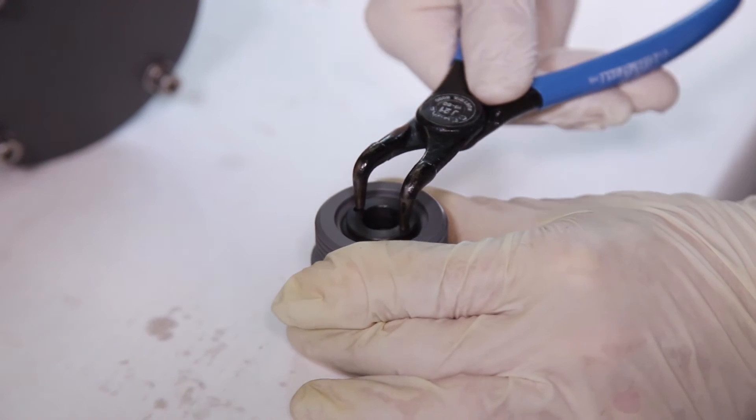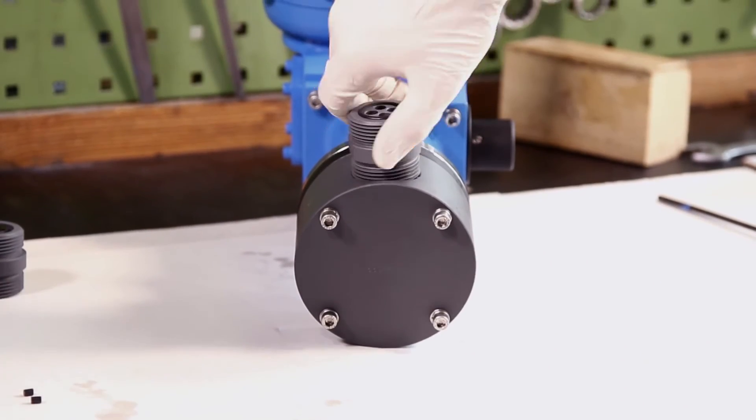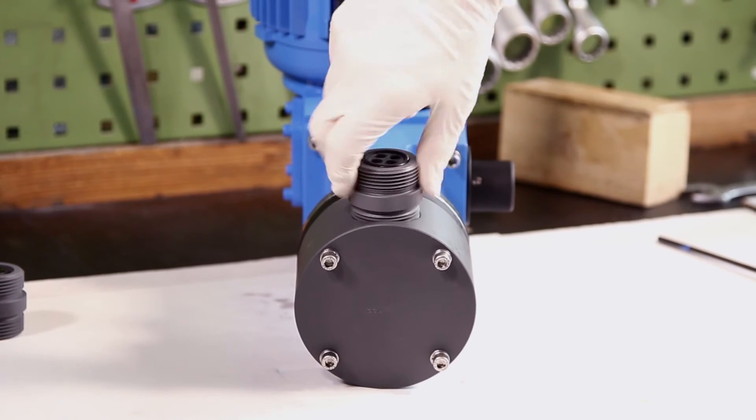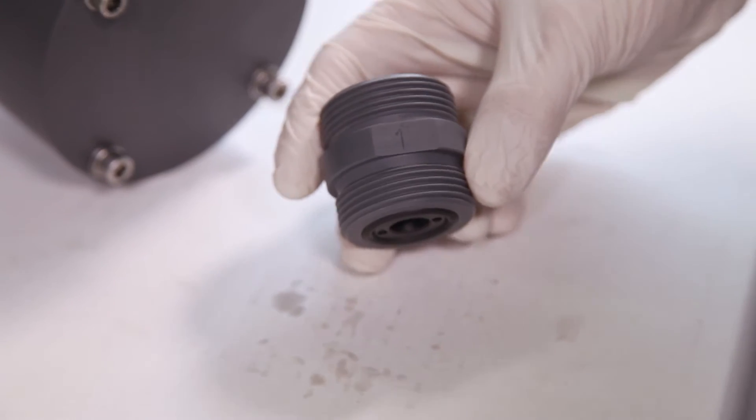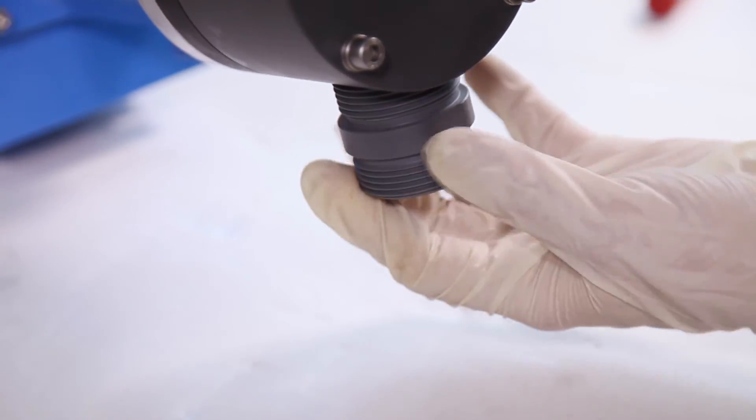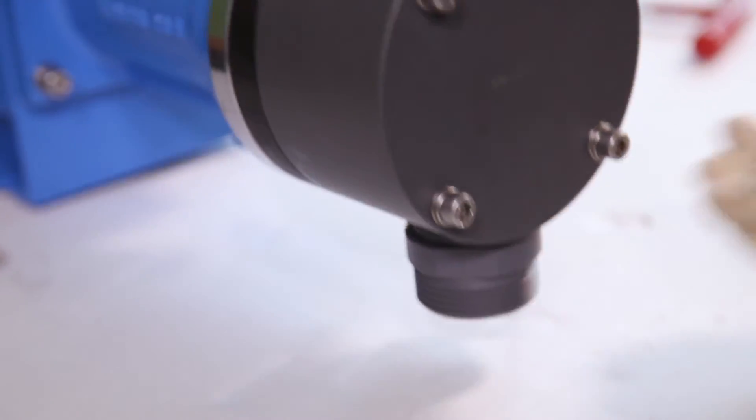After the valves have been fitted with new O-rings, they are screwed into the dosing head. The flow direction has to be taken into account. The arrows on the valves must show upwards in flow direction. Plastic valves should only be screwed in hand tight.